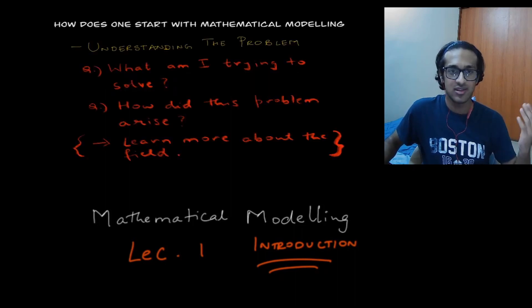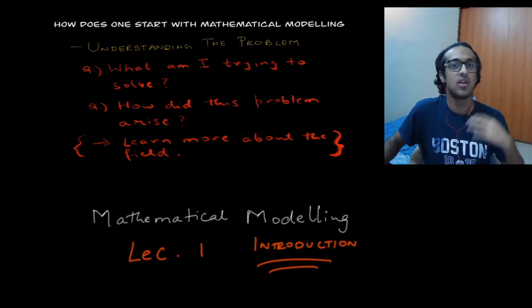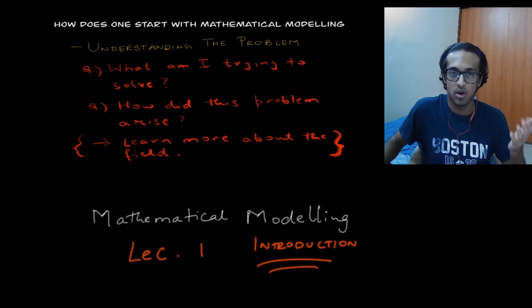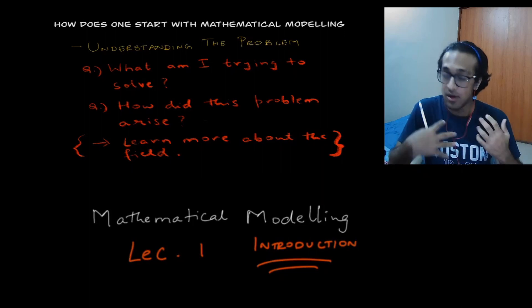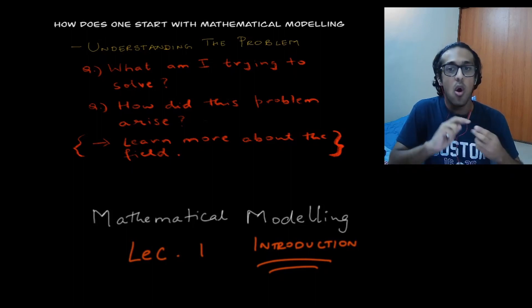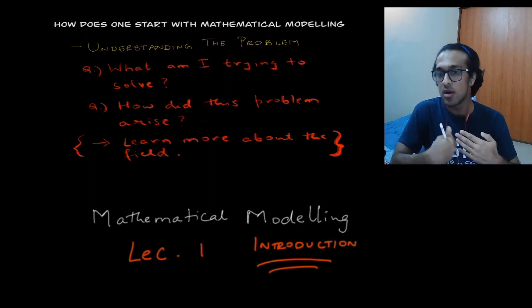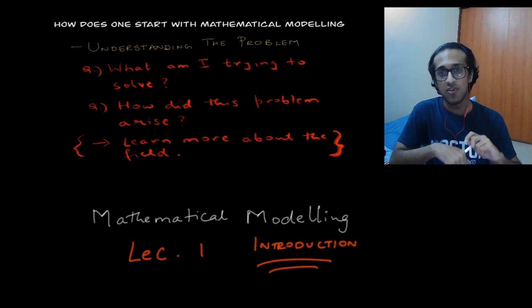So the way you actually get started with mathematical modeling, I describe four key factors that I usually use. The first one is to understand the problem. Half your burden is done if you understand the problem. And the way I do this usually is, I ask myself two questions. One, what am I trying to solve? And two, how did this problem arise? And now to do this, the best way is to usually learn more about the field, maybe read some papers that have been published in that field, or understand the field better. So to give you an example...